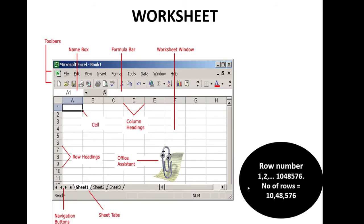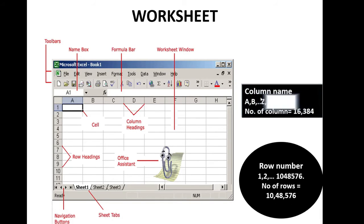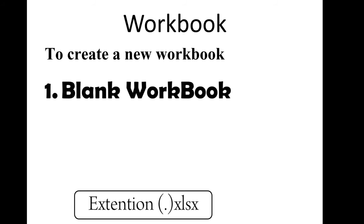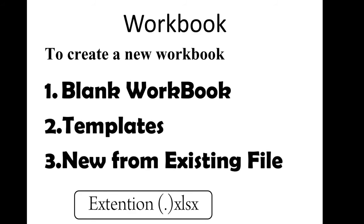The number of rows in a worksheet is 1,048,576 rows, and there are 16,384 columns. A workbook is a file. There are three ways to create a new workbook: Number 1 — Blank Workbook; Number 2 — Templates; Number 3 — New from Existing File. The workbook file is saved with the extension .xlsx.